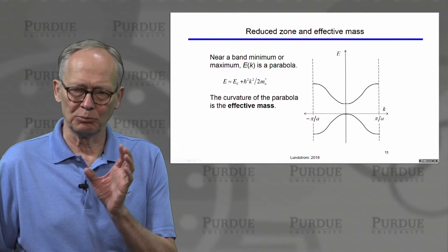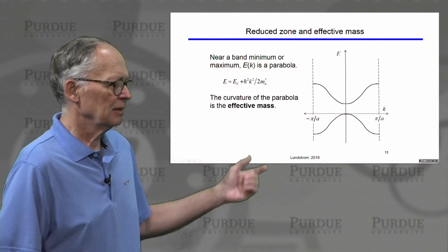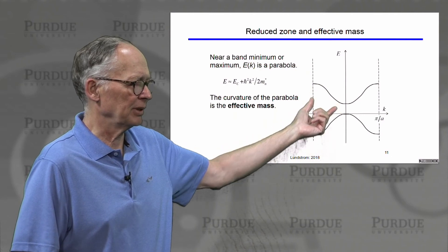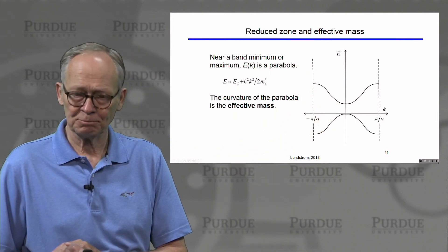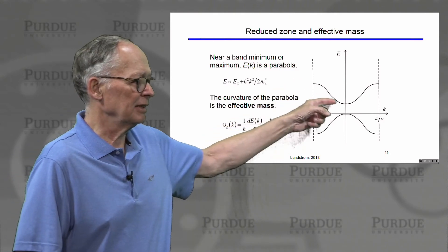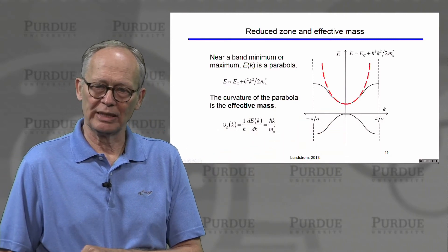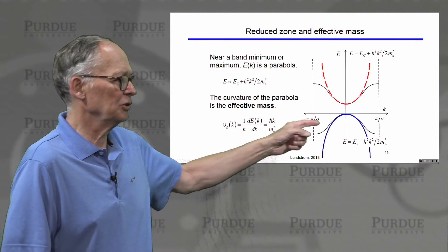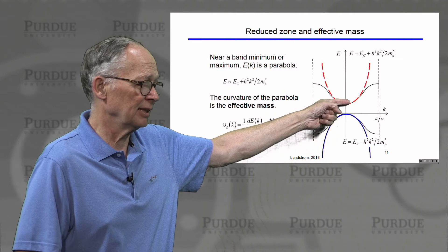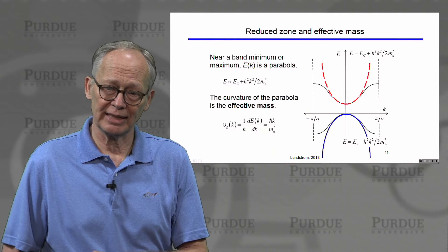So if we only plot the Brillouin zone, then we call this plot a reduced zone plot. The solutions for electrons in crystals in the conduction band would look something like this. In the valence band, it would look something like this. Near the minimum of the valence band and the maximum of the conduction band, these solutions look like parabolas. So we can generally fit the solutions in those regions with parabolas. Since most of the electrons are near the bottom of the conduction band, most of the holes are near the top of the valence band, we can usually get by with that simplifying assumption.